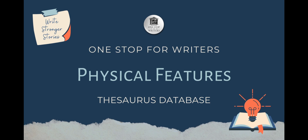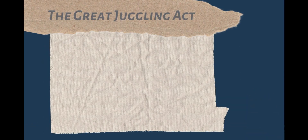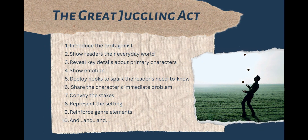At the beginning of a novel we have a lot to focus on: showing the protagonist in their everyday world, revealing their emotions, giving readers a sense of who they are and what's motivating them, unveiling the current problem and what's at stake, making sure the setting is well represented — on and on and on it goes.